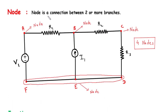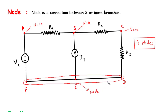Next is node. Node is a connection point between two or more branches. So here we can see there are total 5 branches in this circuit. Here we can see these are two branches, so the connection point of this will be a node. This will be node A, this will be node B, this will be node C, and here this combined forms a single node. So in this circuit there are total 4 nodes.